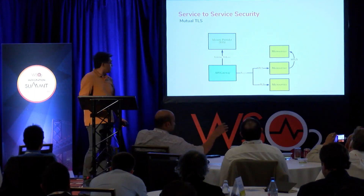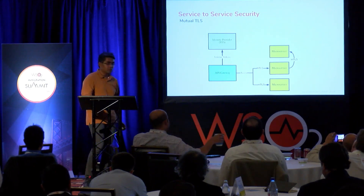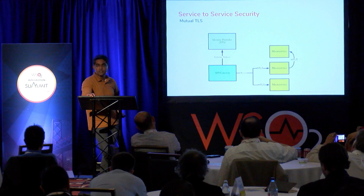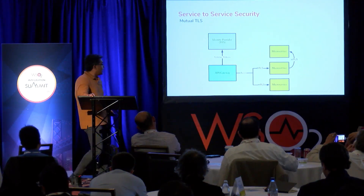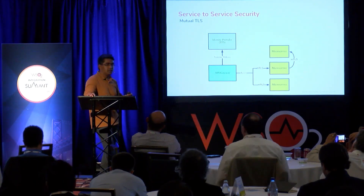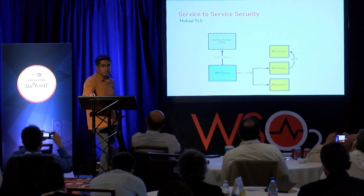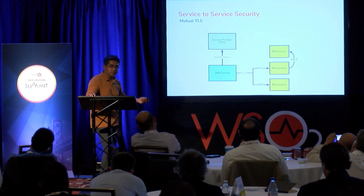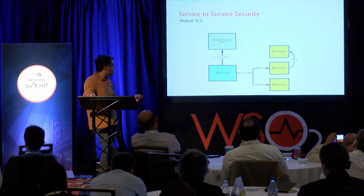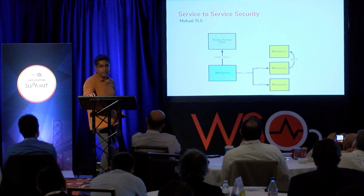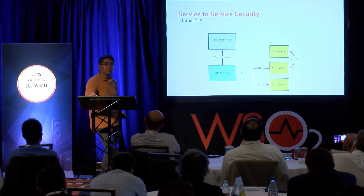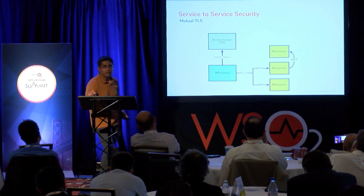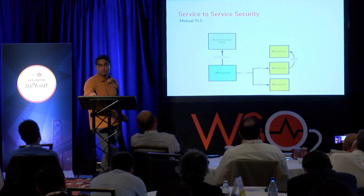A slight improvement to the previous pattern: instead of trusting the network, you secure the communication between the gateway and microservices, and between microservices themselves, with mutual TLS. That secures system-to-system communication, but how do you pass the user context? In this approach they simply pass the user context in an HTTP header, which is not fully secure. There is no way to protect the integrity of those user attributes — if the first microservice wants to change them before forwarding, it simply can.